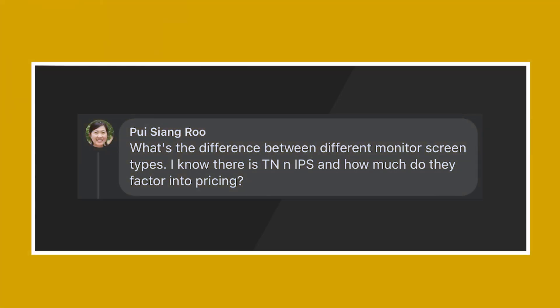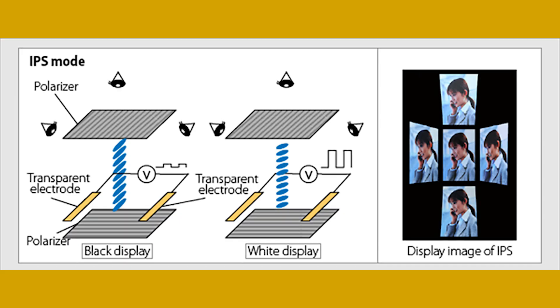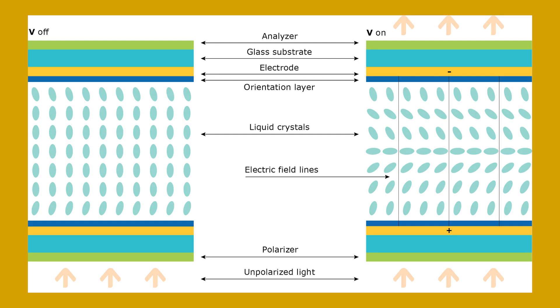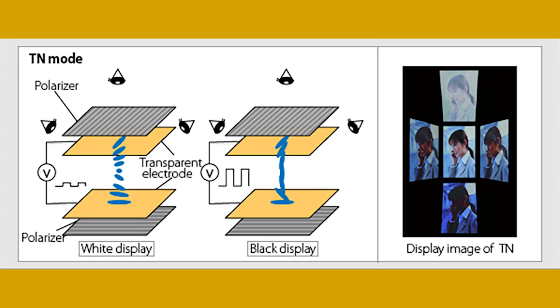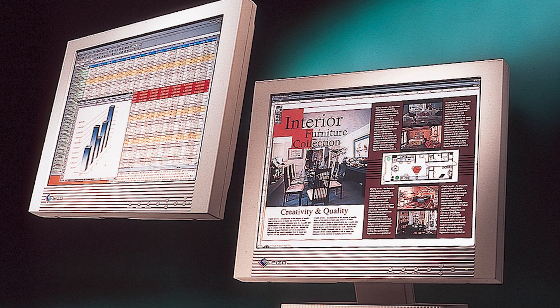Next up, we have a question from Pui Xiangru from RKMD. They ask: what's the difference between different monitor screen types? I know there's TN and IPS and how much do they factor into pricing? Great question. There are actually three main monitor screen types, namely TN, IPS, and also VA. Basically, IPS has the best viewing angles and best color reproduction, while VA has the best contrast. TN historically has fast response time but bad viewing angles. TN used to be the budget one, but nowadays each type has displays in every price range. If you're on a budget, we would still recommend second-hand or cheap VA or IPS panels. Raymond actually wrote a full article on the different types of panels, so I'll leave the link down in the description box below.